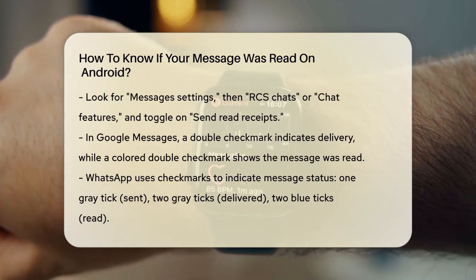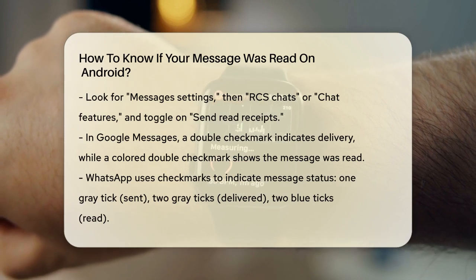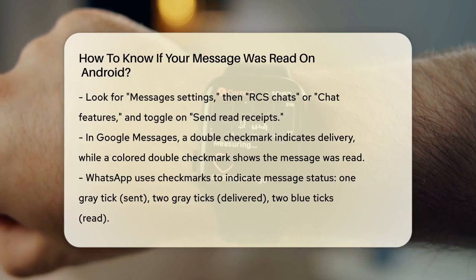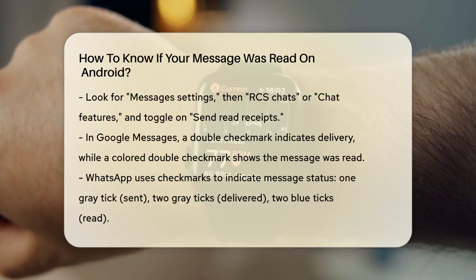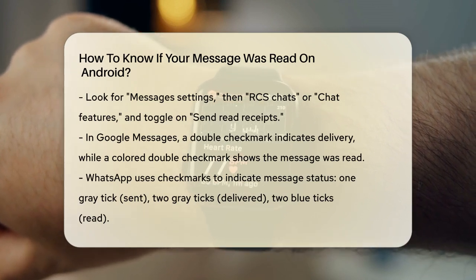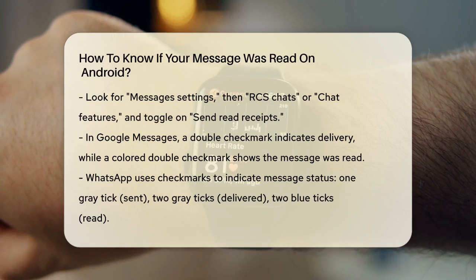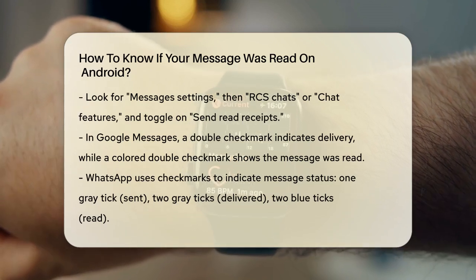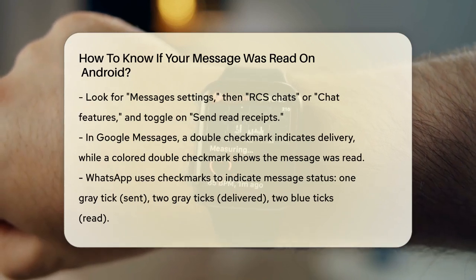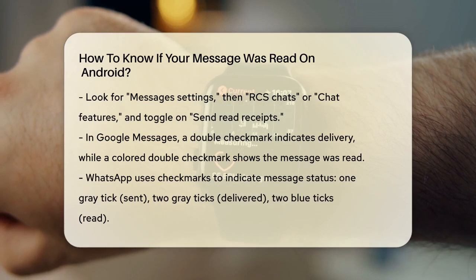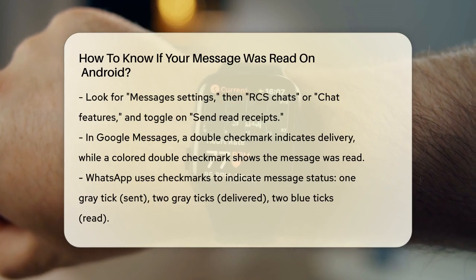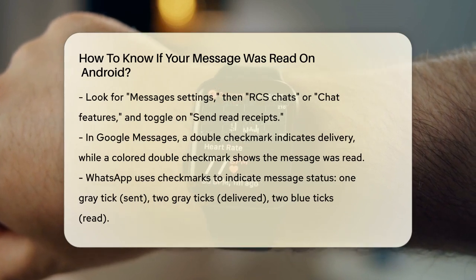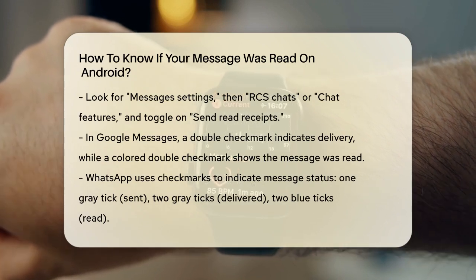Next up is WhatsApp, another widely used messaging app. WhatsApp uses a simple system of checkmarks to indicate the status of your messages. One gray tick means your message was sent from your phone to WhatsApp. Two gray ticks mean it was delivered to the recipient's phone. Two blue ticks confirm that the recipient has read your message.